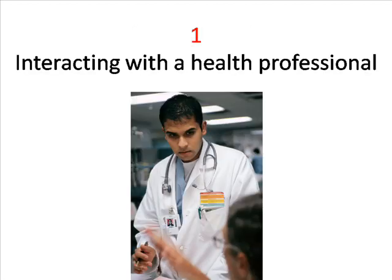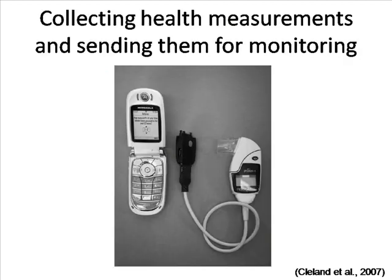Part 1: Using cell phones to interact with a health professional. You can collect health measurements and send them to a health professional for analysis. Here is an example for asthma patients: this peak flow meter measures how air flows from your lungs. The cell phone can transmit this data to your health care professional.